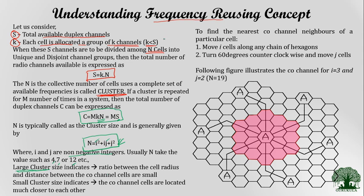In this diagram, let us understand where exactly the co-channel cell is located. Consider this cell using frequency set A. We take the cluster size as 19, where i = 3 and j = 2. Substituting i = 3 and j = 2 into the expression N = i² + i·j + j² gives N = 19. So there will be 19 cells in this particular cluster, numbered 1 through 19.